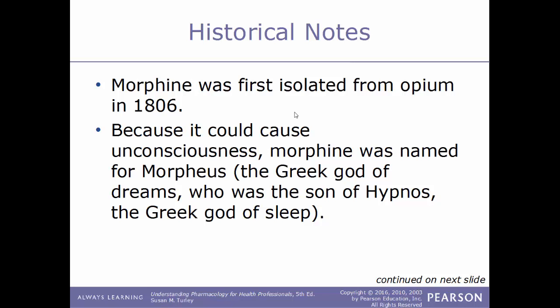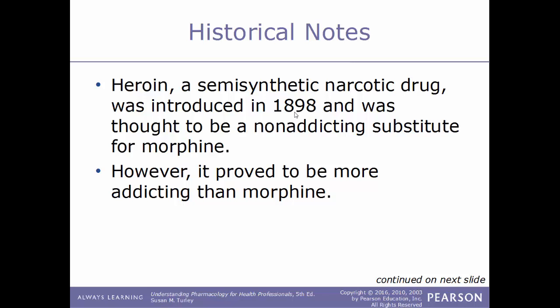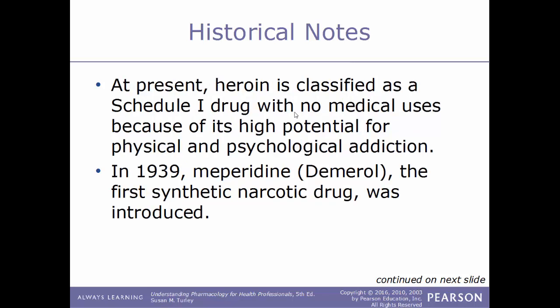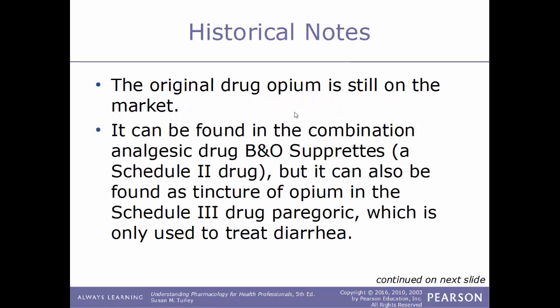A historical note: morphine was first isolated from opium in 1806. Because it could cause unconsciousness, morphine was named for Morpheus, the Greek god of dreams, who was also the son of Hypnos, the Greek god of sleep. Morphine was used extensively during the Civil War to treat battle wounds, resulting in very high rates of addiction among veterans. Heroin, a semi-synthetic narcotic drug, was introduced in 1898 and was thought to be a non-addicting substitute for morphine; however, it proved to be even more addicting. Heroin is currently classified as a Schedule 1 drug with no medical uses due to its high potential for psychological and physical addiction. In 1939, Demerol, the first synthetic narcotic drug, was introduced. The original drug opium is still on the market, found in the combination analgesic drug B&O Suppositories, a Schedule 2 drug, and also as tincture of opium in the Schedule 3 drug paregoric.